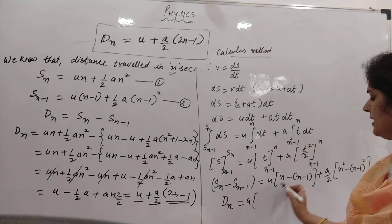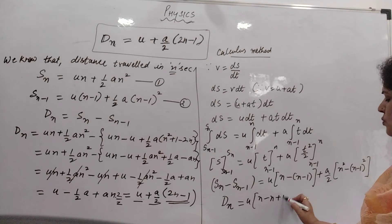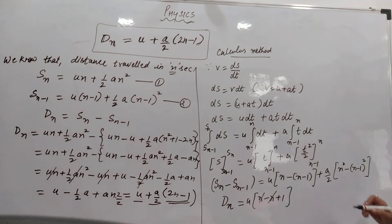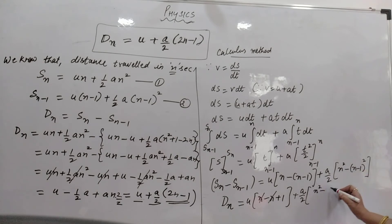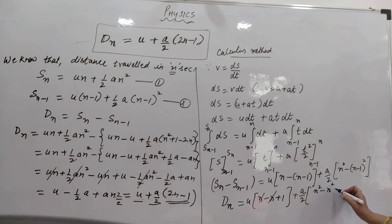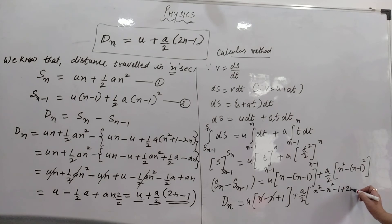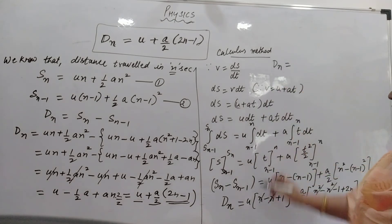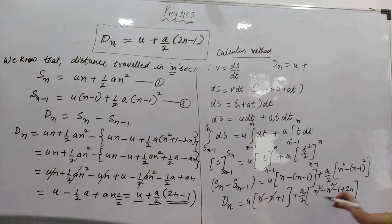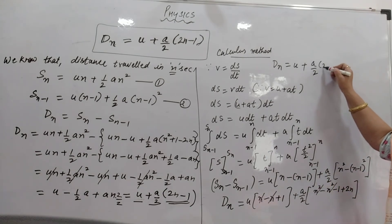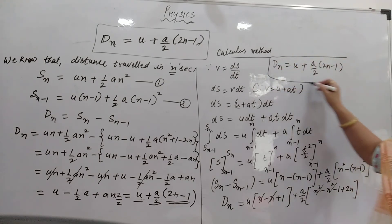Expanding: u into 1 (since n minus n plus 1 cancels to 1), plus a by 2 into (n squared minus n squared minus 1 plus 2n). After cancellation, Dn equals u plus a by 2 into (2n minus 1). We are getting the same expression as we got by the arithmetic subtraction method.